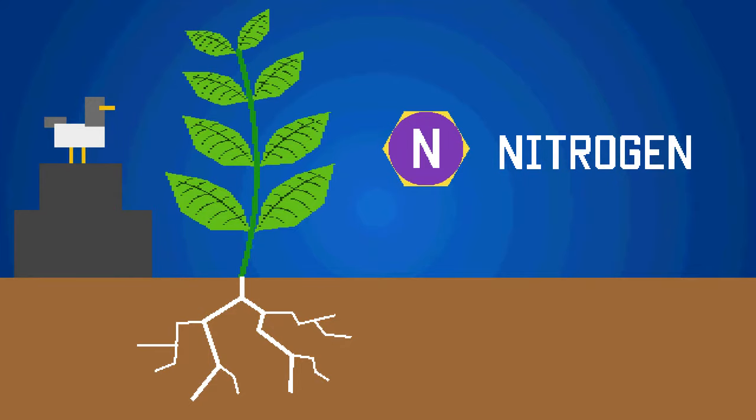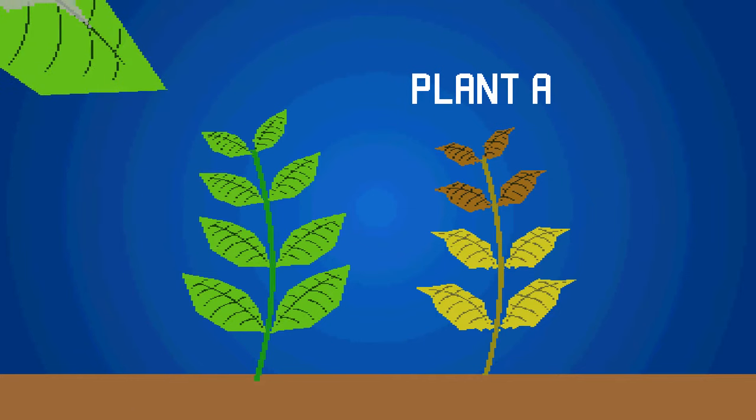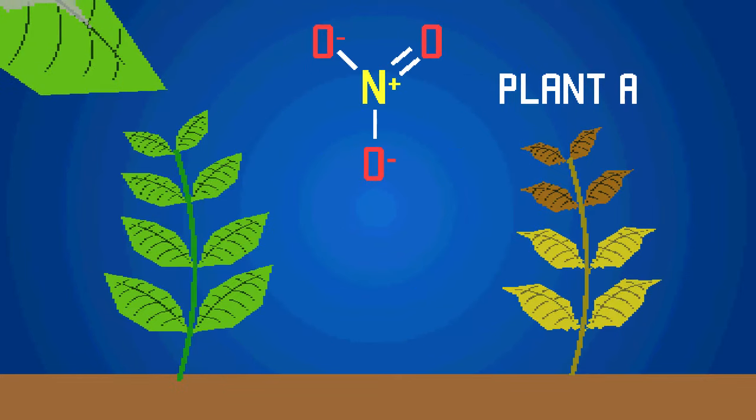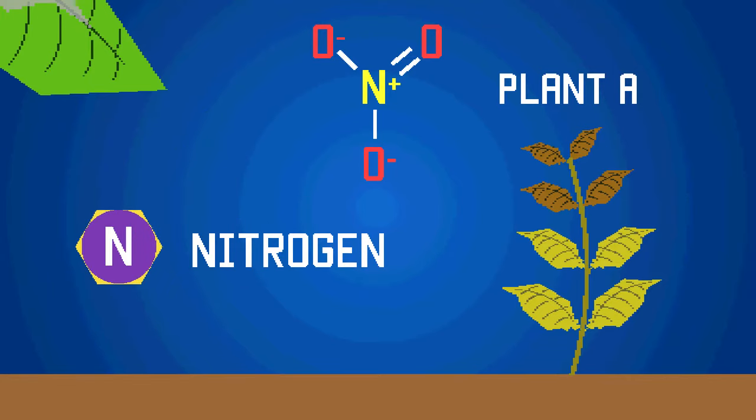For example, nitrogen is needed to make protein. Plant A has not obtained enough nitrogen, which it should get by absorbing nitrate ions from the soil. Without this element, the plant will have stunted growth, the older leaves will be yellow, and sometimes shriveled.